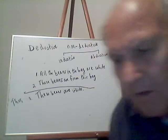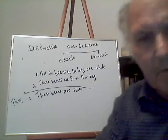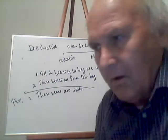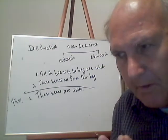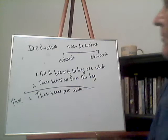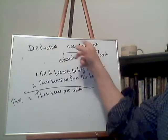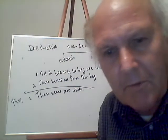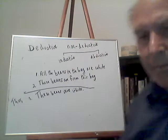Today I'm going to talk more about arguments. I'm going to talk about two main different types: deductive and non-deductive. Non-deductive arguments come in two forms — either inductive or abductive.